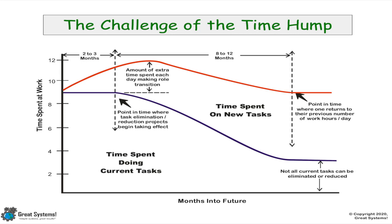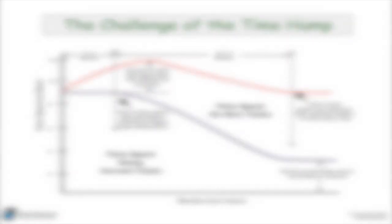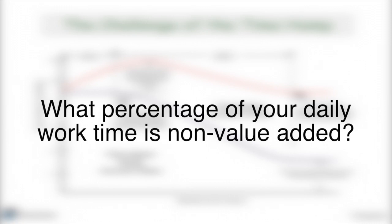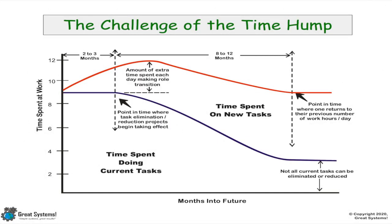One key thing that holds back performance improvement efforts is that we try to always add new tasks to our existing list of tasks — in essence doing two jobs. We fail to eliminate existing non-value-added tasks and replace them with new ones. The time hump doesn't go away; over time we get tired of working extra hours to do the new tasks along with what we were already doing, and eventually we just go back to doing things the same way we've always done them. With any improvement effort there will be a period when you do have to put in extra effort — you can't make any systems change happen overnight.